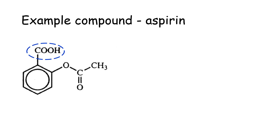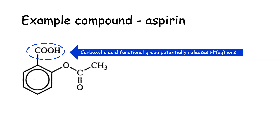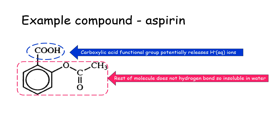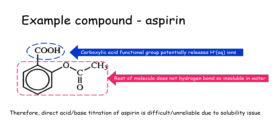If we take the structure of aspirin, you've got a carboxylic acid group circled in blue, and this will partially release hydrogen ions. However, the rest of the molecule doesn't undergo hydrogen bonding very well, so the whole molecule is actually insoluble in water. This means direct acid-base titration of aspirin is quite difficult and unreliable.